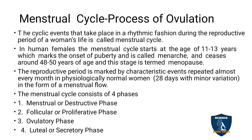During this reproductive period, rhythmic changes occur in the body. These repetitive events that occur rhythmically are called the menstrual cycle. In human females, the menstrual cycle starts at the age of 11 to 13 years, which marks the onset of puberty and is called menarche.